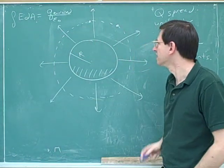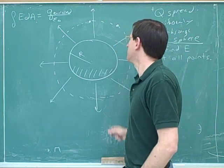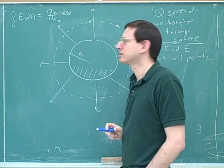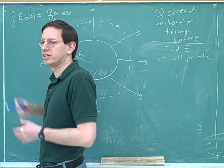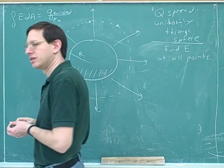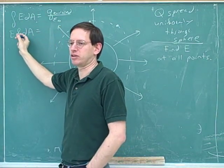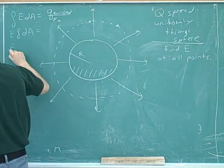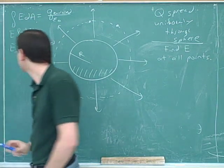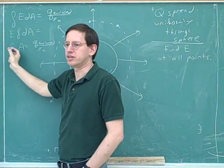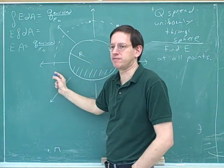All the electric field vectors would be pointing outward like this. It's arbitrary how many we draw, but they'd all point out. So they all have different directions, but they should all have the same magnitude at every point on the sphere — the magnitude of E is constant. So how can we simplify this formula? When E is constant, the integral reduces to a simpler formula, as we said earlier.